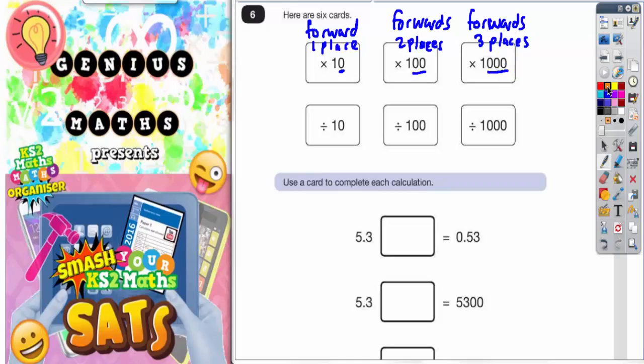If you're dividing, the number needs to get smaller. So you're not moving the digits forwards, you are moving the digits backwards: backwards one place, backwards two places, and backwards three places.